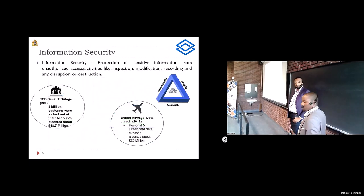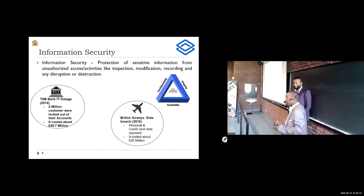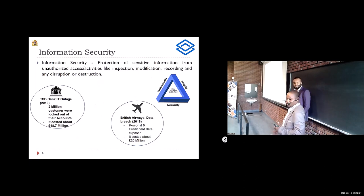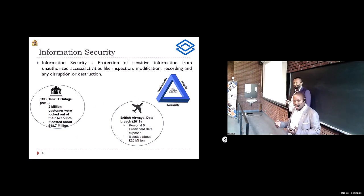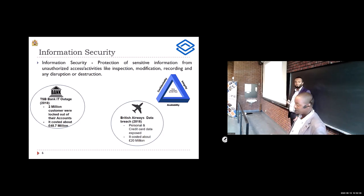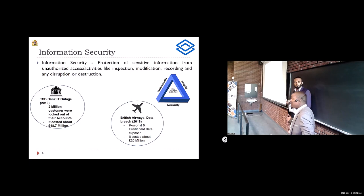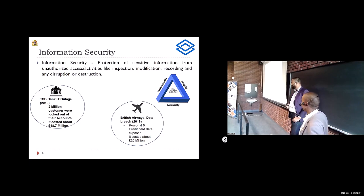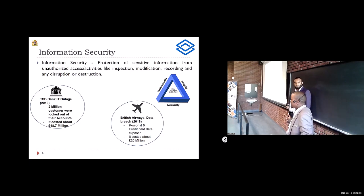When it comes to information security, most people think of it as just having a username and password, but it goes beyond that. There are neglected areas — like neglected tropical diseases in medicine — including ensuring systems are available and that data doesn't get modified arbitrarily. It's only when we understand the cost that comes with information security that we take it seriously. There are examples where information security breaches cost millions.